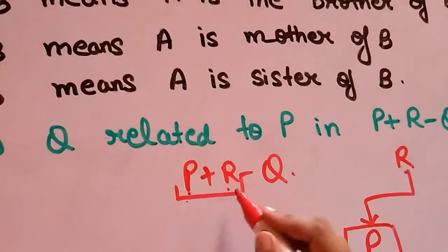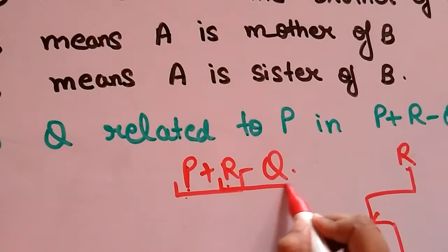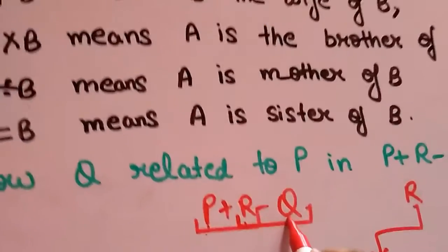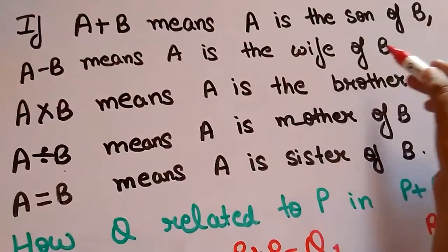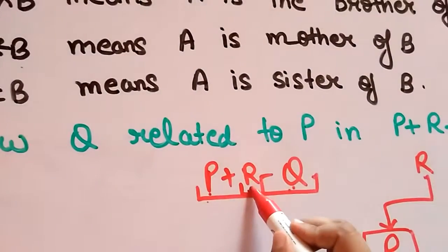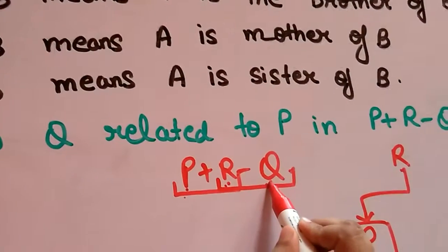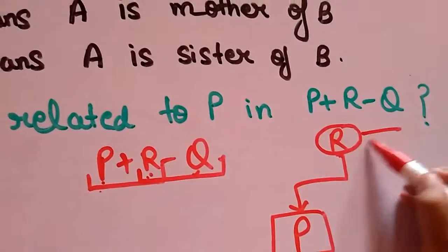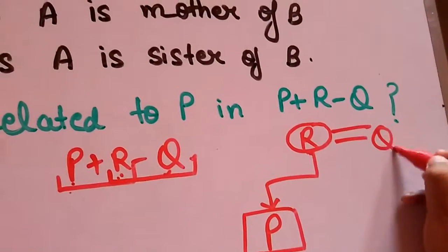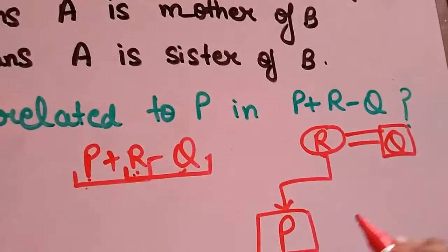Now let's see the next relation, that is R-Q. R-Q: A-B means A is the wife of B, that is R is the wife of Q.